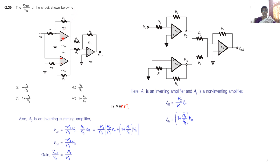This circuit consists of three operation amplifiers: A1, A2, and A3. In operation amplifier A1, input is given to the inverting input terminal, so it is known as an inverting operation amplifier. For A2, input is given to the non-inverting terminal, so it is known as a non-inverting operation amplifier. And for A3, two inputs are given to the inverting terminal, so it is known as an inverting summing amplifier.